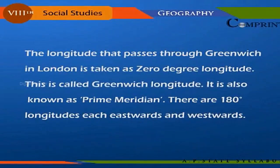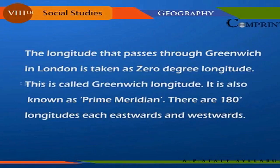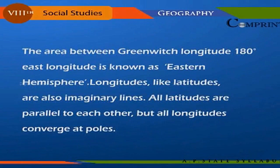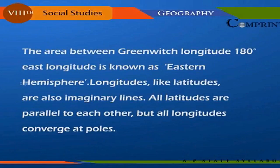The longitude that passes through Greenwich in London is taken as zero degree longitude; this is called the Greenwich longitude, also known as the prime meridian. There are 180 degrees of longitude both eastward and westward. The area between the Greenwich longitude and 180 degrees east longitude is known as the eastern hemisphere. Like latitudes, longitudes are also imaginary lines; all latitudes are parallel to each other, but all longitudes converge at the poles.